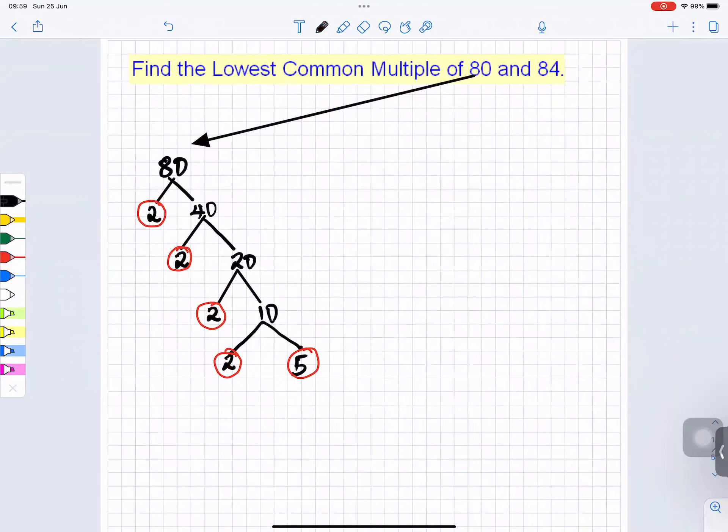So that means 80 now equals—how many twos are there? 1, 2, 3, 4—so 2 times 2 times 2 times 2 times 5. I write it expanded like this for a particular reason, and then I'll do the same with 84.